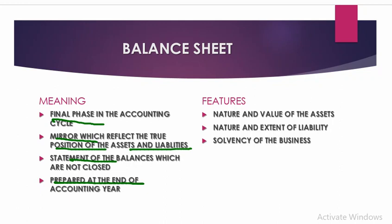It is generally prepared at the end of the accounting year. It shows the financial position — how much assets we have, how much liabilities we have. The balance sheet is the statement of assets and liabilities. It shows the nature — whether it's a current asset or a fixed asset — and the value of the asset. It indicates the quality and composition of assets, nature and extent of liabilities — short-term and long-term — and the owner's contribution. It also indicates short-term and long-term solvency and discloses the mix of debt and equity.